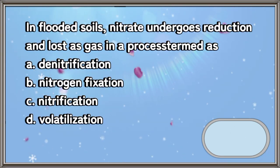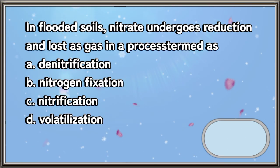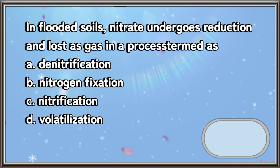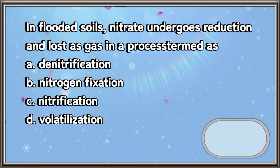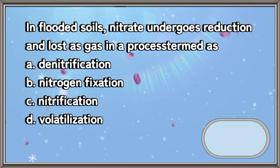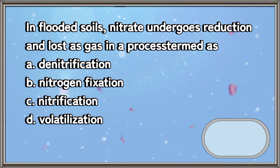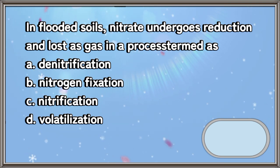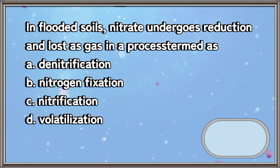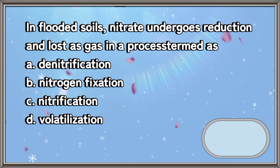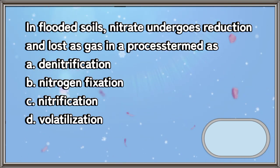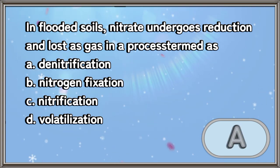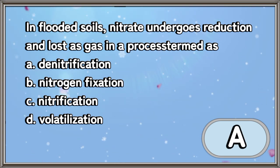In flooded soils, nitrate undergoes reduction and is lost as gas in a process termed as: A. Denitrification. B. Nitrogen fixation. C. Nitrification. D. Volatilization. The answer is letter A.